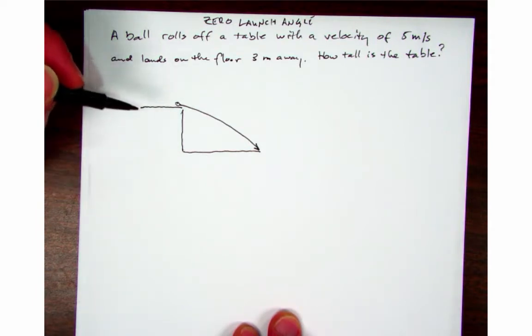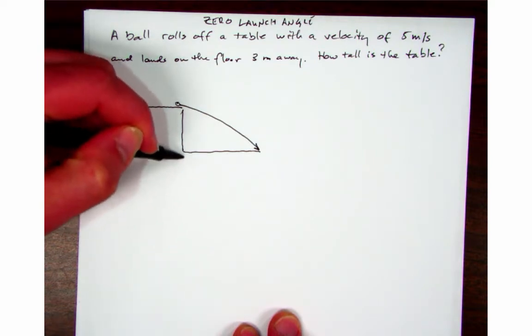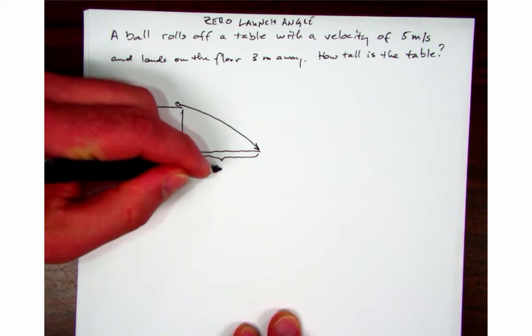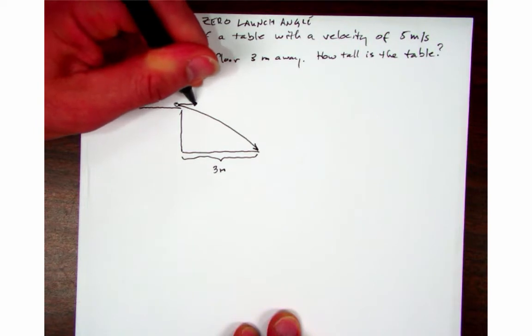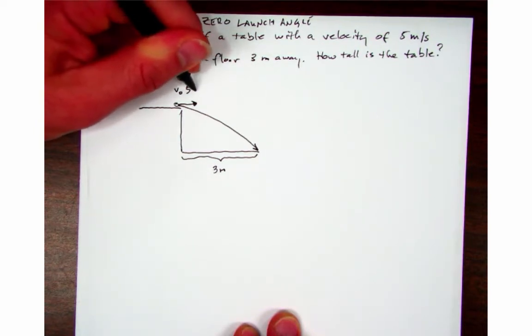So I'm going to start out with the drawing here just to kind of get my bearings on how this all works. And I know that it lands three meters away and I know that it starts out with an initial velocity of five meters per second.